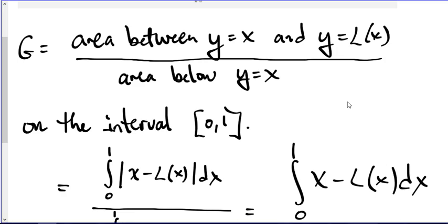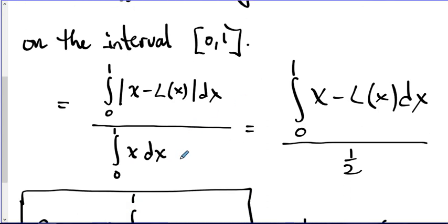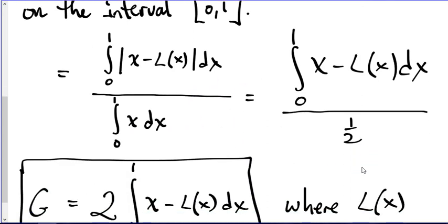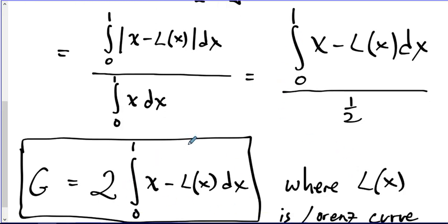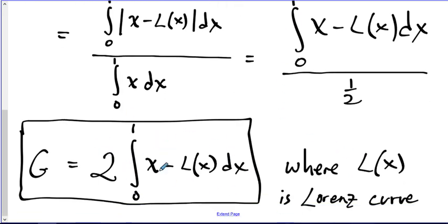My definition is area between Y equal X and Y equal L of X, all divided by the area below Y equal X. So the area below Y equal X is this 1 half, and since I'm divided by 1 half, I can flip that to make it 2, and that's where we get our formula for the value G that we call the Gini index.